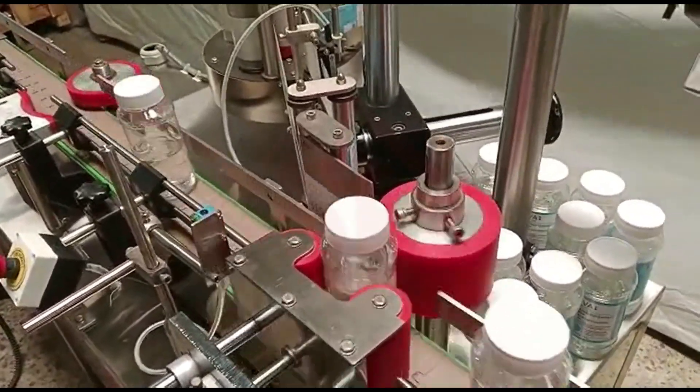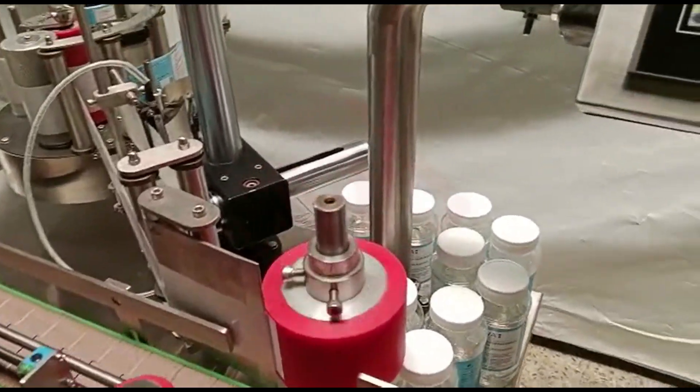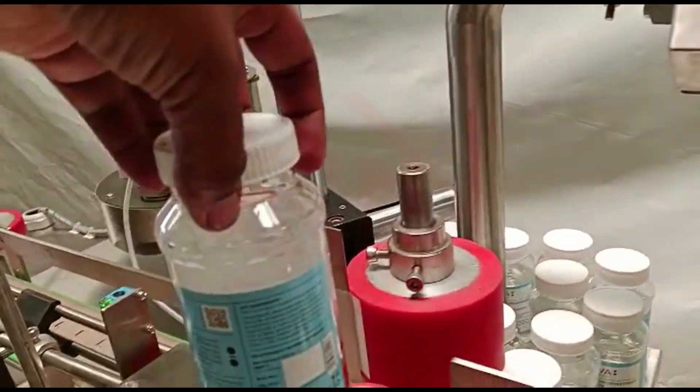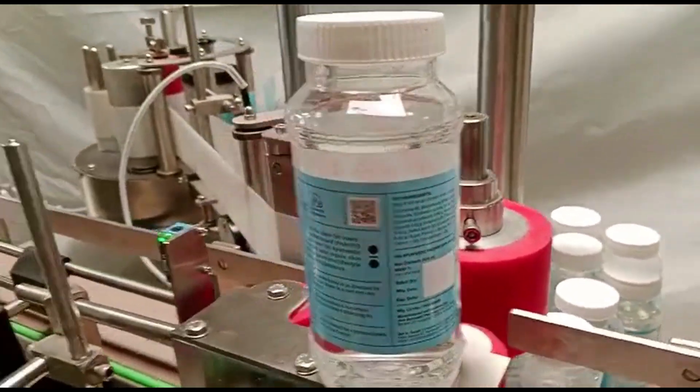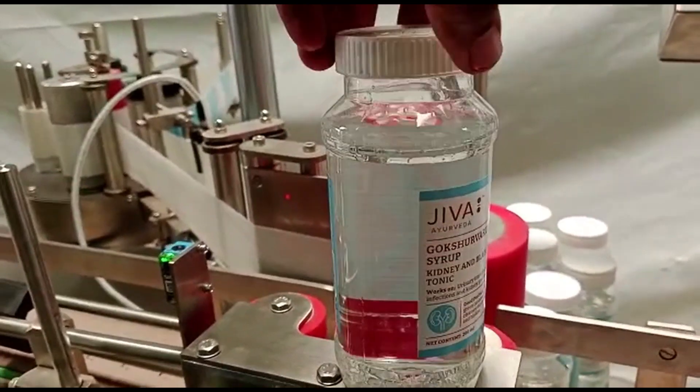Label Application: The machine utilizes various methods to apply the labels accurately onto the bottles. Common labeling techniques include wrap-around labeling, where the label is wrapped around the bottle, and rotary labeling, where the bottle rotates while the label is applied.